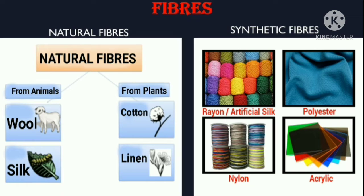Now let's see the different types of fibers. The different types of fibers are classified into two types: natural fibers and synthetic fibers. Some examples of natural fibers are wool and silk, obtained from animals, whereas fabrics like cotton or linen are obtained from plants. Some examples of synthetic fibers are rayon or artificial silk, polyester, nylon, and acrylic.